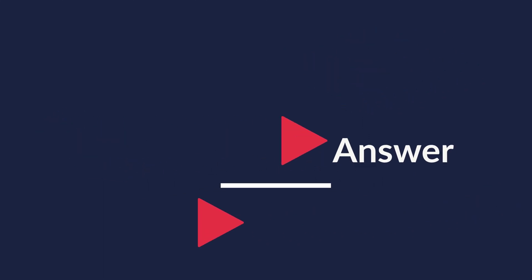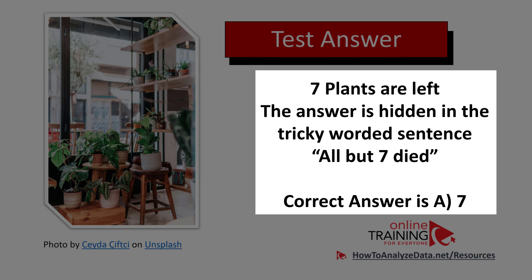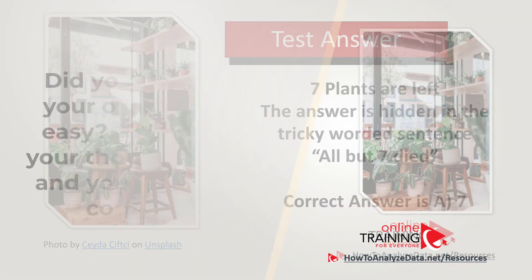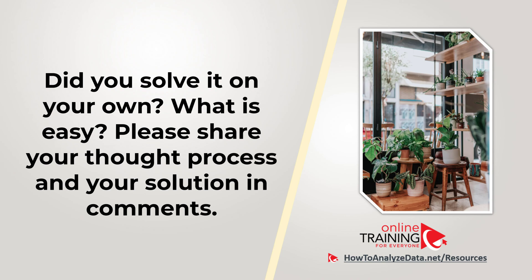The answer is 7 plants are left. The answer is hidden in the tricky wording: 'all but seven died.' The florist had 57 plants and all of them but seven died, so the correct answer is A — 7. Hopefully you've nailed this question and now know how to answer similar problems on the test.